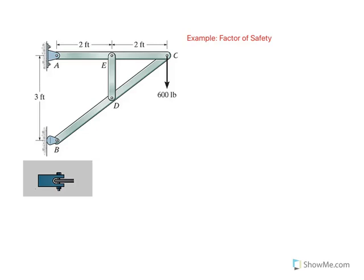In this problem, we want to talk about the concept of factor of safety and use that to find the minimum diameter needed for the pin at A. So you have this frame subjected to one load, a 600-pound load, and we know the strength of the pin at A. Given that the yield shear stress for the pin at A, based on the material that is made of, is 15 KSI.